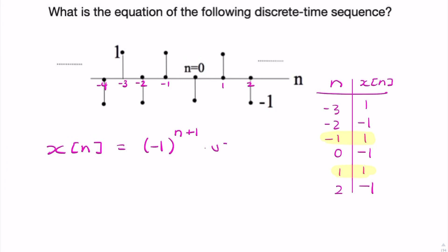Do we need to multiply by a unit step? No, because this is clearly a non-causal signal, because the signal exists for negative time, so it's non-causal.